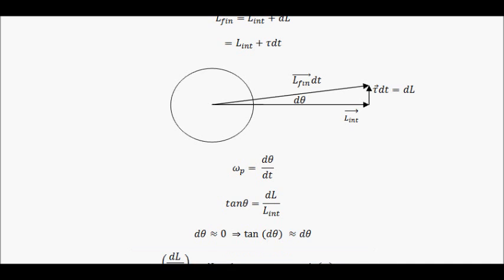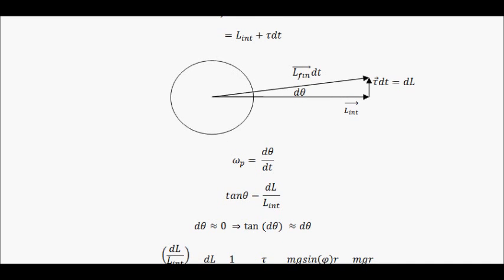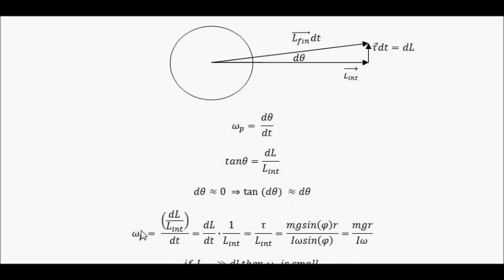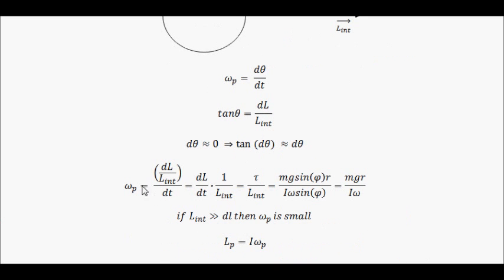So all I'm doing is substituting these results into this equation here. So I've got my angular velocity here is equal to dL over Lint. So I've substituted tan θ, which is also equal to dθ. I've substituted this dL over Lint into this equation here because of dθ over dt. So I've substituted this into this.